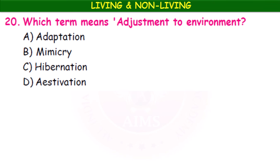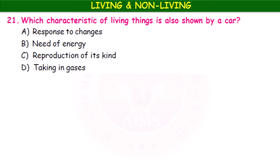Which term means adjustment to environment — adaptation, mimicry, hibernation, or aestivation? Adaptation is the adjustment to changes in the environment. Which characteristic of living things is also shown by a car — response to changes, need of energy, reproduction, or taking in gases? A car is non-living but requires energy in the form of fuel to run, so the answer is 'need of energy'.